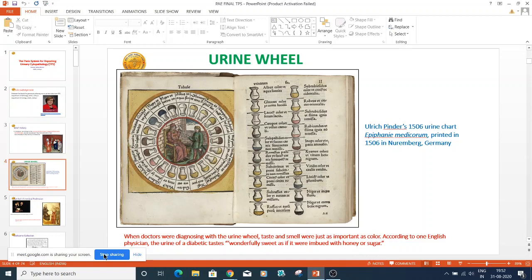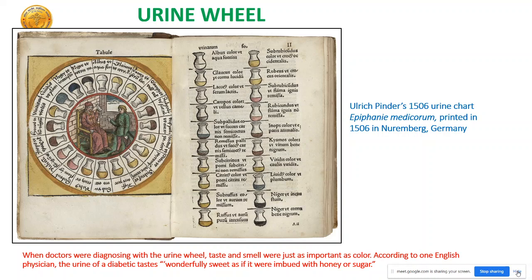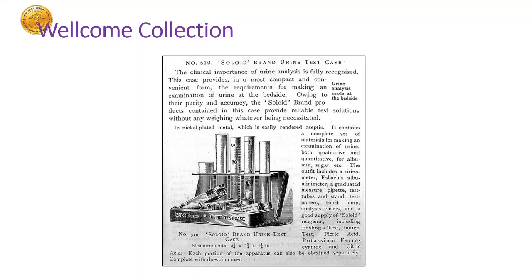This is Ulric Pinder's urine chart — there was something called the urine wheel which had more than 20 colors of urine with which they used to decipher disease. They would say the urine was ruby red or white in color and associated different diseases with those conditions. An interesting anecdote: when doctors were diagnosing with the urine wheel, taste and smell were considered as important as other characteristics. A British physician has been known for saying that patients who have diabetes, their urine tastes as sweet as honey.